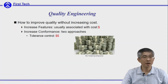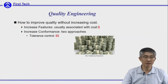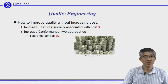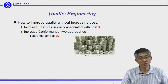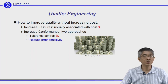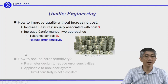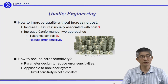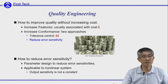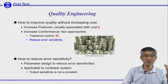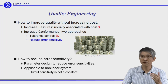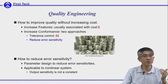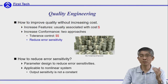How to improve quality without increasing cost is the main issue in this course. You can either increase features, but increased features are associated with money. The second approach is to increase conformance. Tolerance control is not a good idea since it will increase cost, so we need to reduce error sensitivity. What do I mean by error sensitivity and how to reduce it? We will use parameter design. Because most engineering systems are non-linear, the output sensitivity will be different from place to place and is not a constant. If we can find a design that fulfills our performance requirement, it will be even better if that design has a low sensitivity to parameter variations.